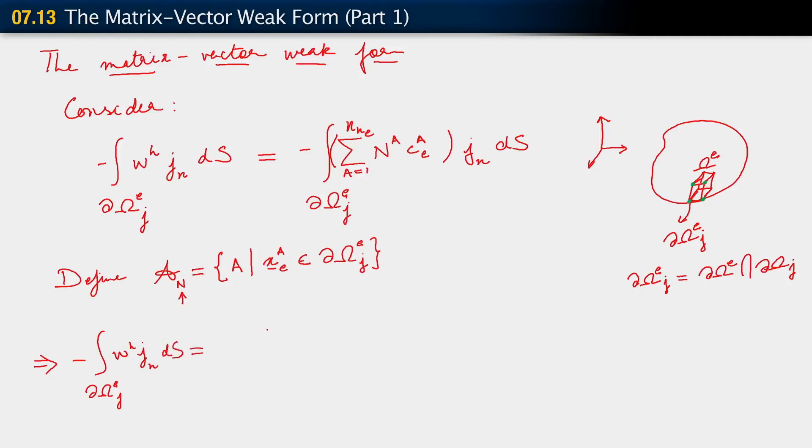What we see then is that -∫ over this surface of w_h^j n dS equals, now I'll pull our summation out and say A belongs to the set A_n. We have c_A^e ∫ over ∂Ω_e^j of N^A j_n dS.